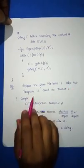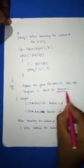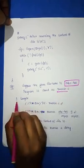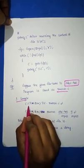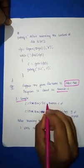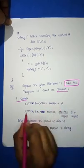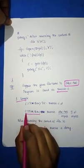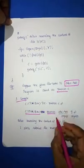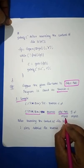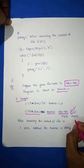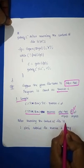Suppose the file is abc.txt and the program is saved as reverse.c. Go to the command prompt, navigate to C:\tc\bin, and compile with: tcc reverse.c. If there are no errors you get the prompt back. Then run the program by typing the executable name, followed by abc.txt as argv[1], and the number of characters to reverse (e.g., 5) as argv[2].